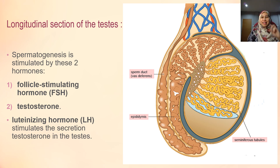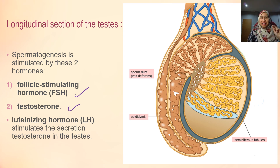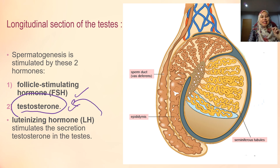Spermatogenesis is stimulated by two types of hormones: the first is follicle stimulating hormone, known as FSH, and the second is testosterone. Luteinizing hormone, LH, will stimulate the secretion of testosterone in the testes, meaning LH helps in the secretion of the testosterone hormone.